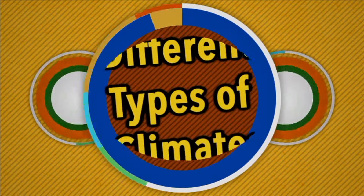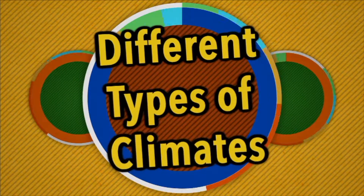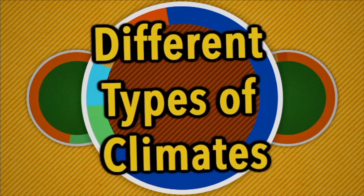All places or regions on Earth have a particular weather pattern. A weather pattern that takes place over a specific area is called climate. Let's talk about different types of climates.